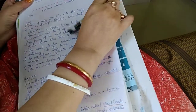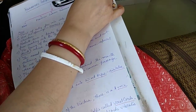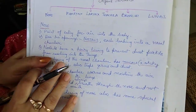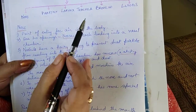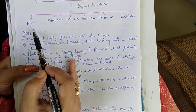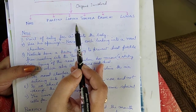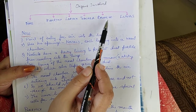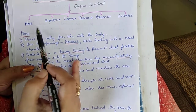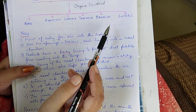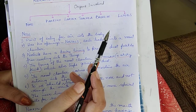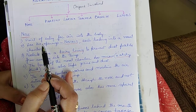Now, respiration in humans. For respiration in humans, the organs involved are the nose, the pharynx, the larynx, trachea, bronchi, and the lungs. These six organs are involved in the respiratory system of humans.